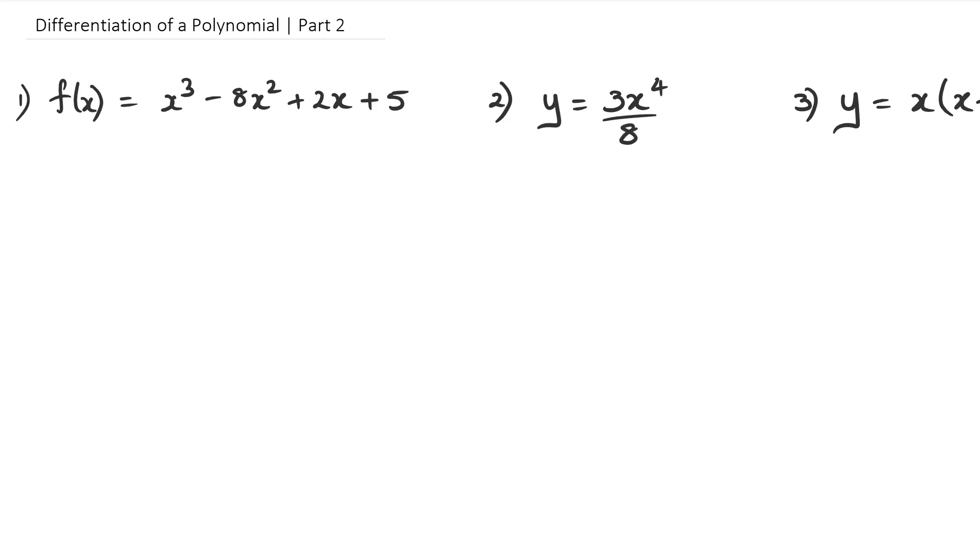So what we have is we've got f of x, so when we differentiate it, we're going to write it as f dash of x. Now x cubed, it differentiates to 3x squared because the coefficient of x is 1, so that's going to become 3x, and then the power is reduced by 1, so 3 minus 1 is 2. Then I've got negative 8 times 2, which is negative 16, and then x to the power of 2 minus 1 is just 1, so I don't really need to write the 1, I can just leave it as it is.